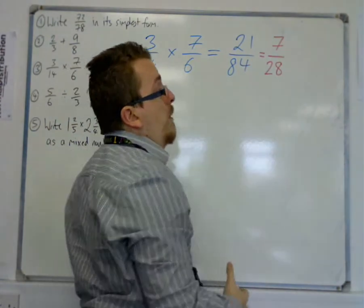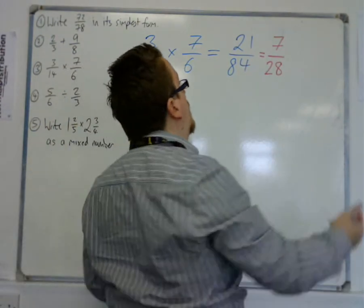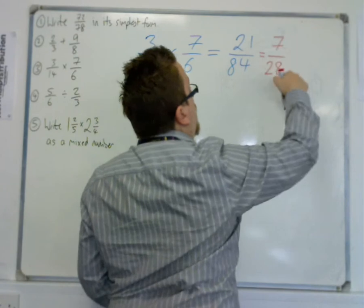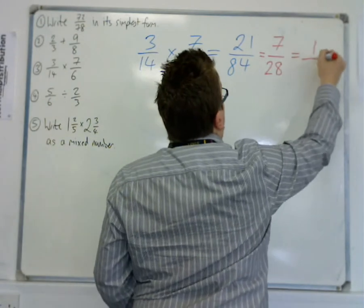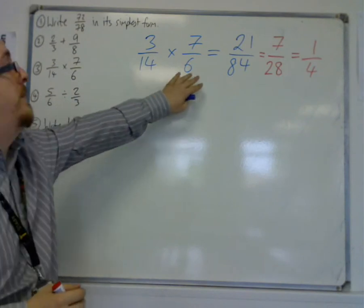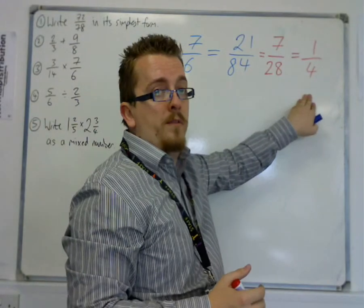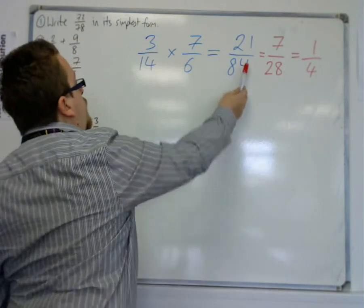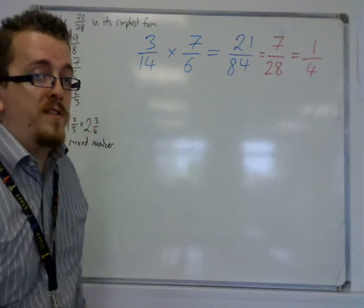7 over 28. Well, 28 is in the 7 times table, so you can divide both top and bottom by 7, and you get 1 over 4. So 3 over 14 times 7 over 6 is actually 1 quarter. But make sure you know that you can multiply fractions like that.